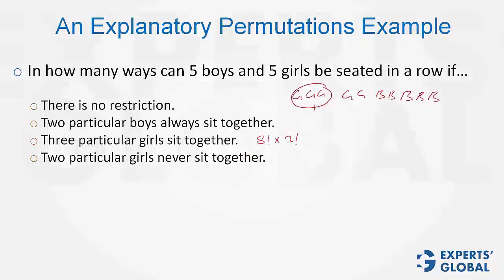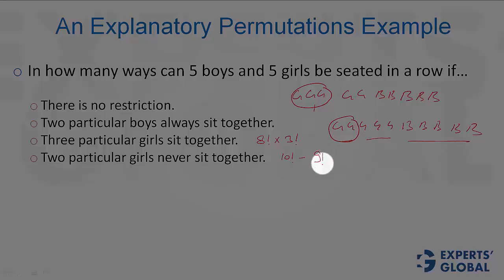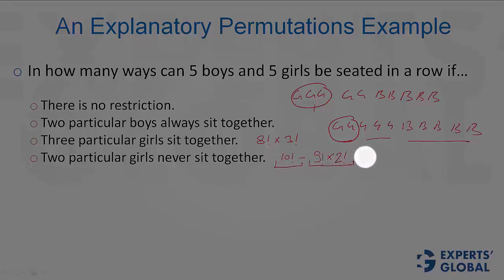Case 4: 2 particular girls never sit together. Finding these cases directly would be very complex. The right way is to look at the total number of cases and subtract the cases where the 2 particular girls are together. From the total number of cases — which is 10 factorial — we subtract the cases in which these 2 girls are together. They would be together in 8 elements plus 1 pair, equals 9 entities: so 9 factorial arrangements. These 2 girls can be shuffled in 2 factorial ways. Subtracting this from the total gives the number of cases when they are not together.